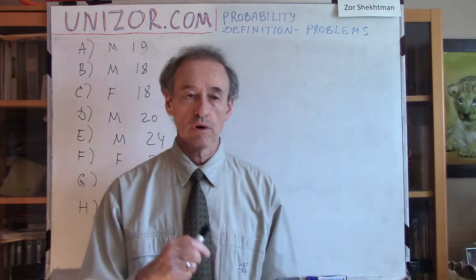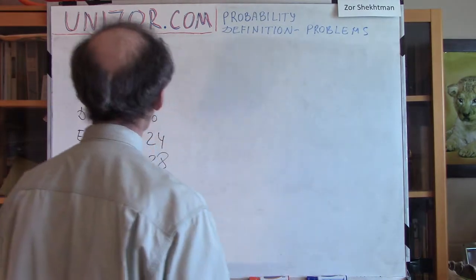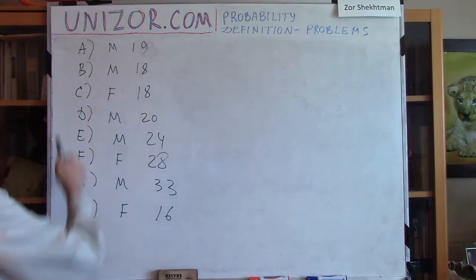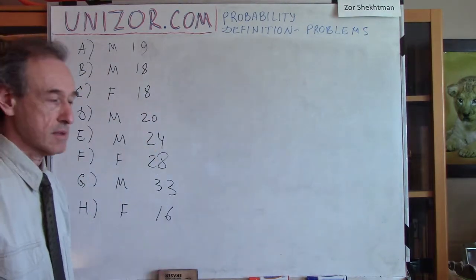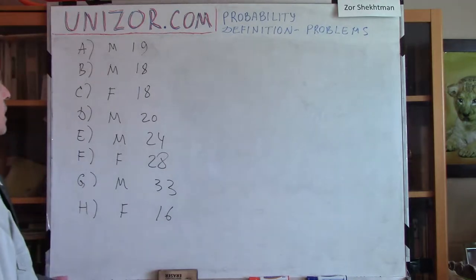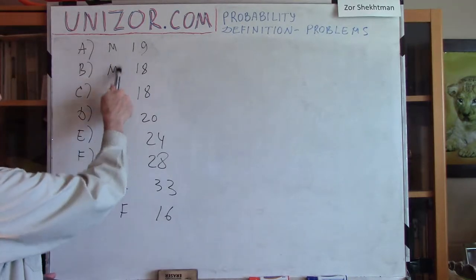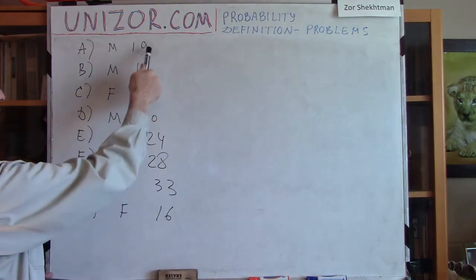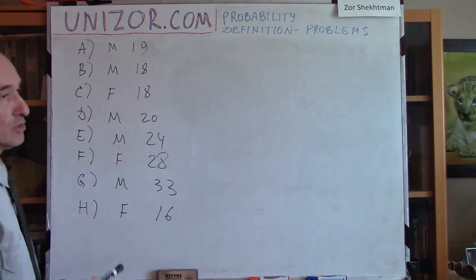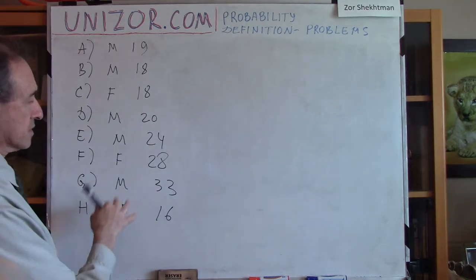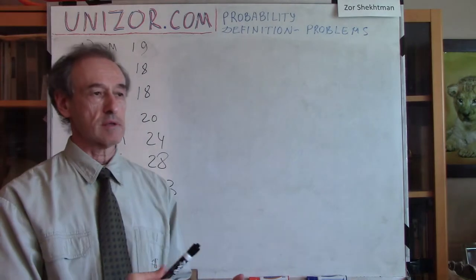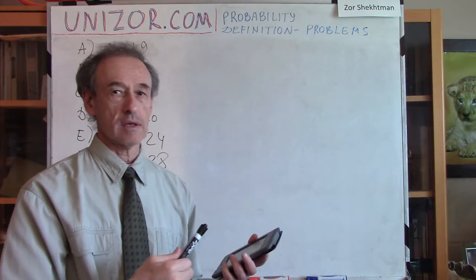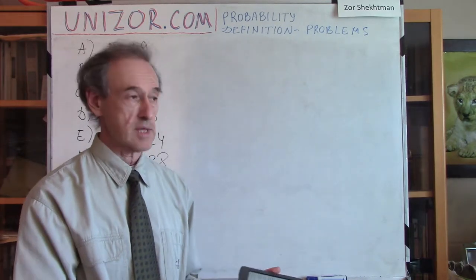In the previous lecture I was exemplifying all these problems using a certain set of people which are, let's say, in a room. They are males or females — M or F — these are their names, and this is the age of these people. I was using this set of people to demonstrate that the probabilities of certain events can be expressed as a measure of certain sets and subsets.